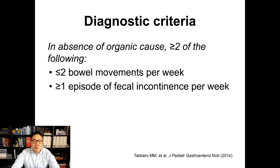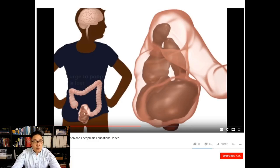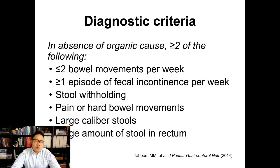From the Rome 4 diagnostic criteria for functional constipation, in the absence of an organic cause, two or more of the following are needed: two or fewer bowel movements per week; one or more episodes of fecal incontinence per week — parents may be confused why liquid stool leakage is a consequence of constipation, and the 'Poo in You' video on YouTube is a great resource for that. The remaining criteria are stool withholding, painful hard bowel movements, large caliber stools, and a large amount of stool in the rectum on rectal exam.